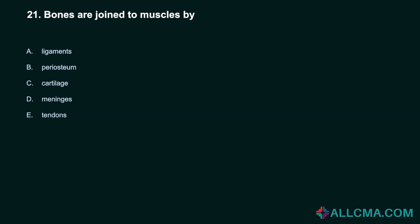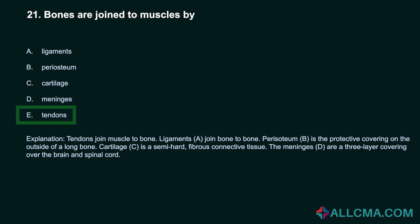Question 21: Bones are joined to muscles by: A. Ligaments. B. Periosteum. C. Cartilage. D. Meninges. E. Tendons. Correct answer: E. Tendons. Tendons join muscle to bone. Ligaments join bone to bone. Periosteum is the protective covering on the outside of a long bone. Cartilage is a semi-hard fibrous connective tissue. The meninges are a three-layer covering over the brain and spinal cord.